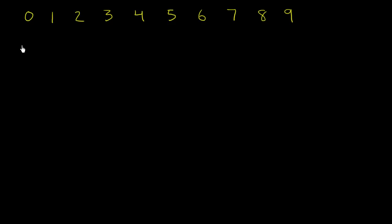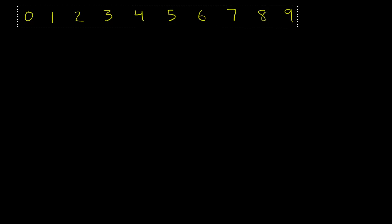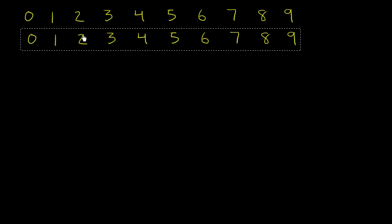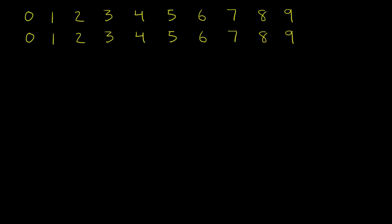And we know, of course, that the next number is 10. But instead of writing it down, I'm just going to copy and paste all of this and see what this does for us. We know the next number is 10, which one way to think about it is it's a 1 followed by a 0.